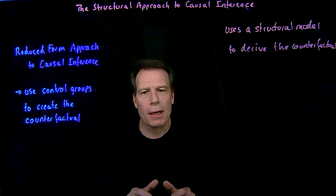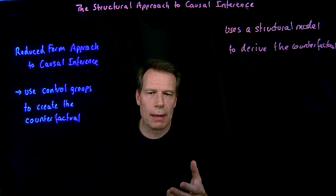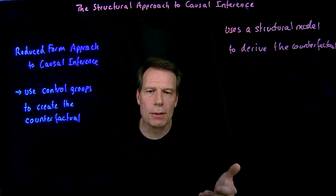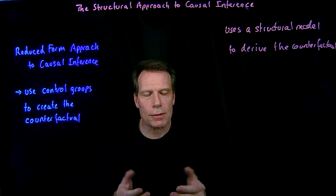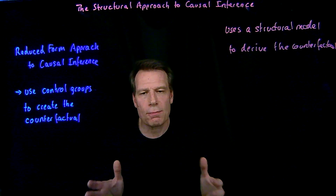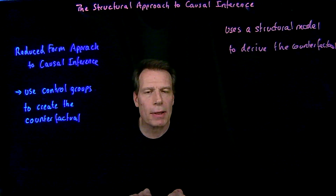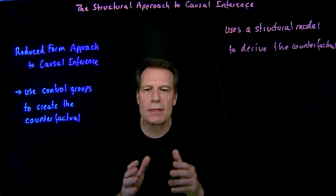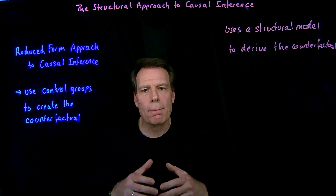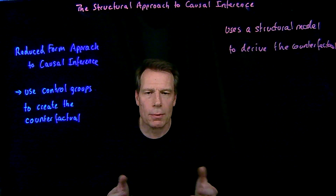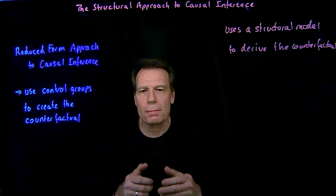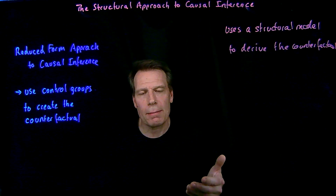Think, for example, about climate change. The important question, aside from just a description of how the climate is changing, is how much human activity is contributing to climate change. Climate scientists can't use a reduced form approach — there is no treatment group and control group. We don't have a set of planets where on some planets there is human activity and on others there isn't. We have a single planet impacted by the treatment of human activity. So climate scientists create a model of the climate, using all the information available to them.